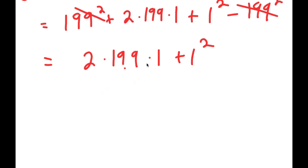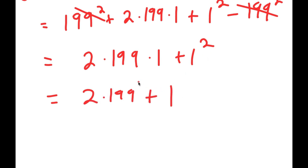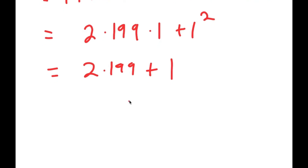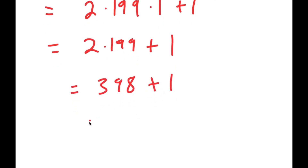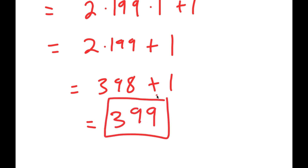2 times 199 times 1 is the same as 2 times 199, and 1 squared is just 1. So I have 2 times 199, which equals 398, plus 1, which equals 399. So my answer is 399, and that was method one.